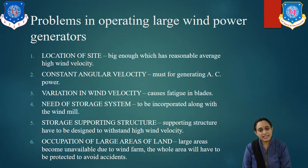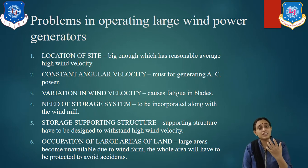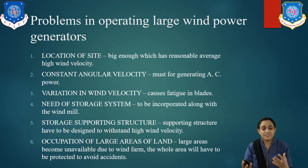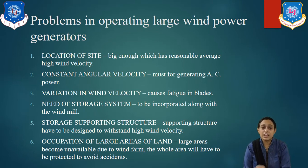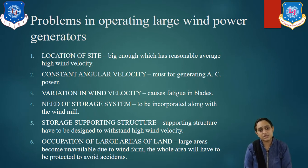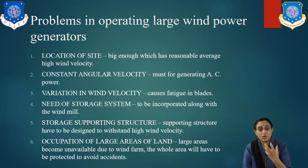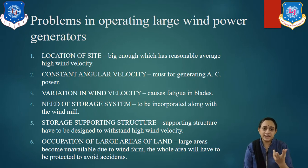Second is constant angular velocity, which is a must for generating AC power. If there is no constant velocity, we will get variable power and cannot store it, hence the system should have constant angular velocity. Third is variation in wind velocity — if there are large variations, it creates fatigue in the blades and the blades will break.